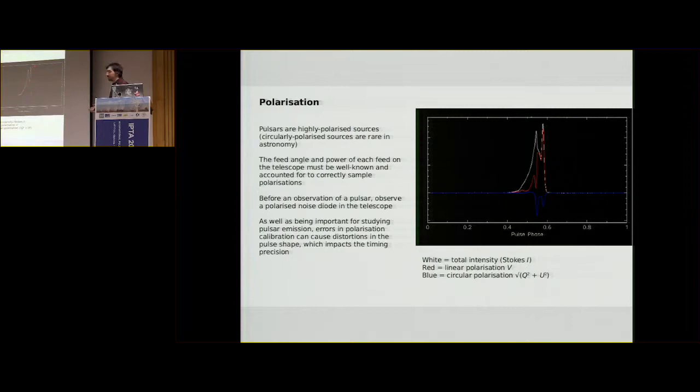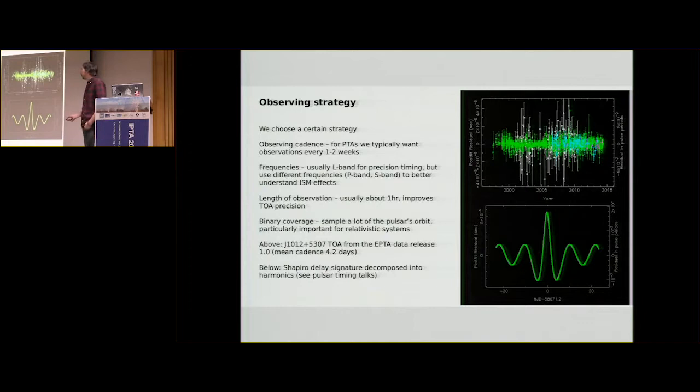Which goes on to impact your timing precision. This is just basically because of how the total intensity is formed. If you have some huge amount of power in one polarization and try to form your Stokes I, it's going to cause a small but very noticeable deviation from the expected pulse shape. And you can end up with some huge structures in your timing data that are difficult to account for.